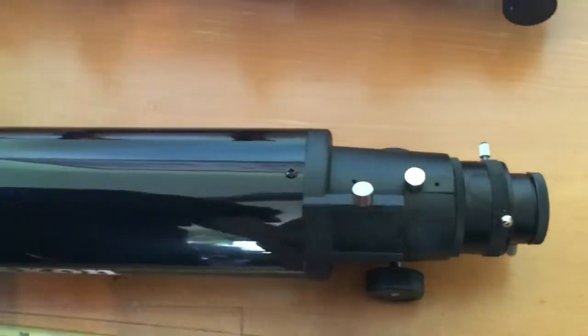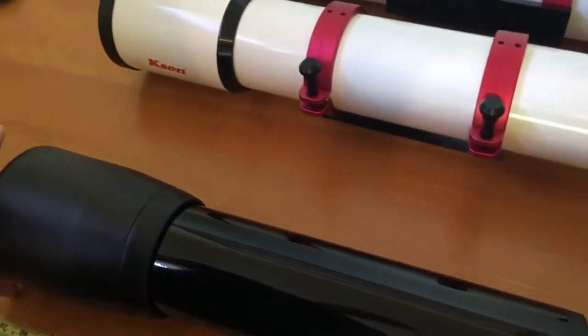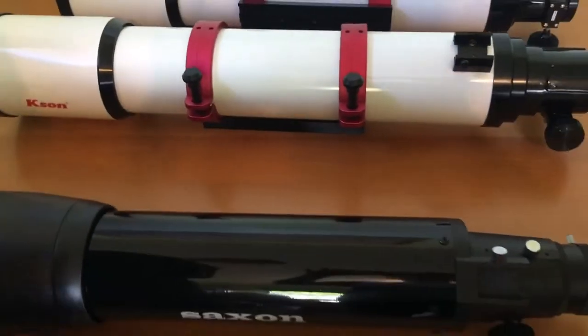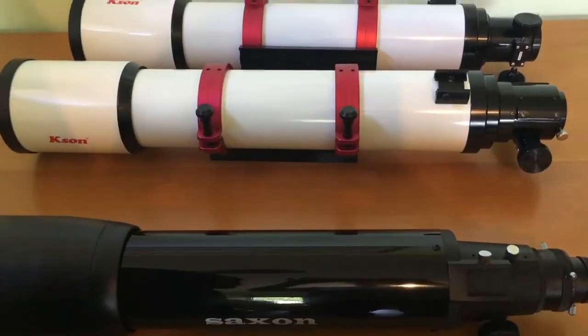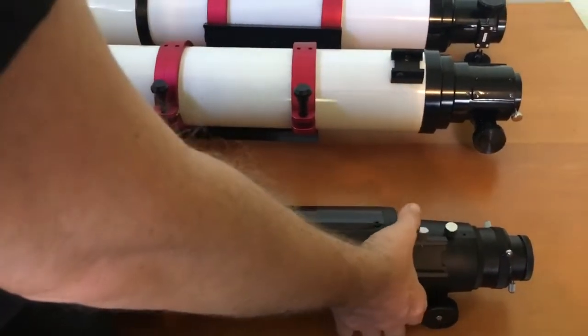That is just one thing that you should take into account. It is quite a light scope. The entire thing only weighs 2.2 kilograms. So it can be mounted on a fairly light mount such as the one that is supplied with the package.